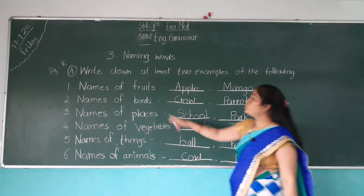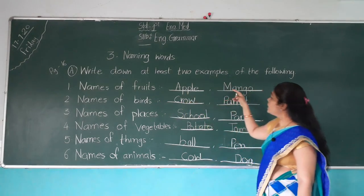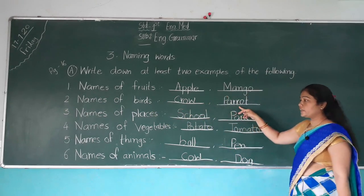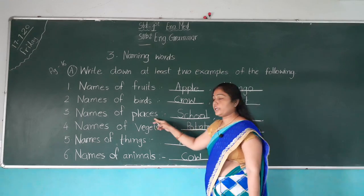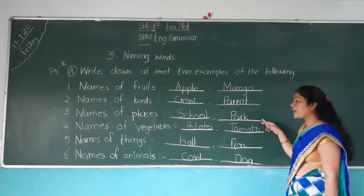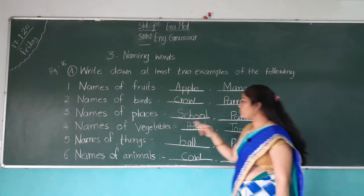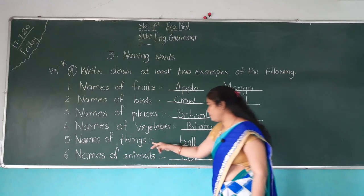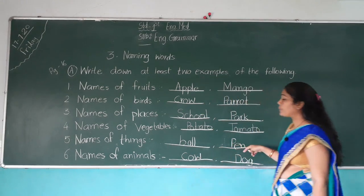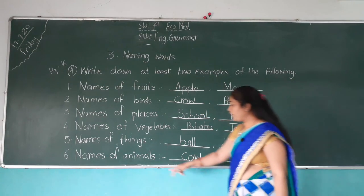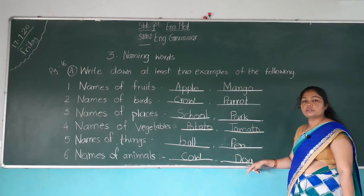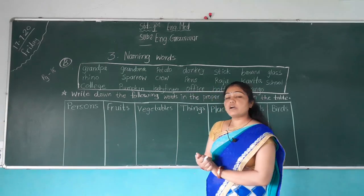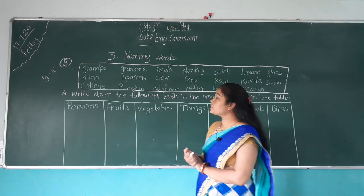Again, let us read: two fruit names — apple, mango. Two bird names — crow, parrot. Two place names — school, park. Two vegetable names — potato, tomato. Two thing names — ball, pen. Two animal names — cow and dog. Now, students, page number 16, Exercise number B.